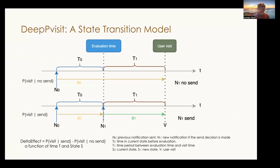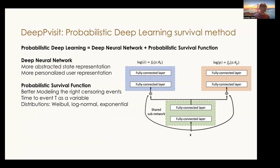For the other case, when the send decision is made and a new notification is sent out, there is a state transition from the current state to a new state. We name this probabilistic difference between the two cases the delta effect, which is a function of time t and state s.